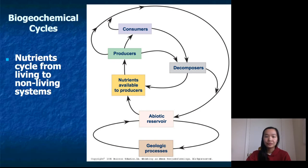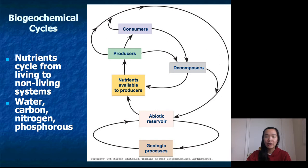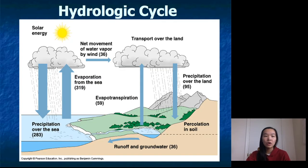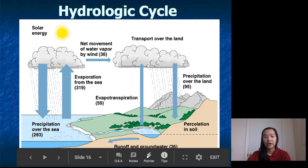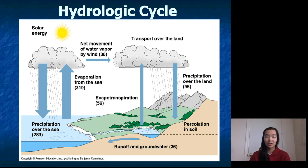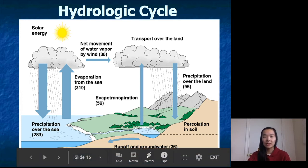The four cycles we're going to talk about are water, carbon, nitrogen, and phosphorus. Starting with the water cycle — this is the most straightforward because you can actually see elements of it happening. We start with the ocean in the bottom-left corner. The sun powers the whole hydraulic cycle: energy from the sun reaches the water in the ocean, causing evaporation — the water goes from liquid form into gas form. You can see the giant blue arrow going up from the sea labeled 'evaporation.'